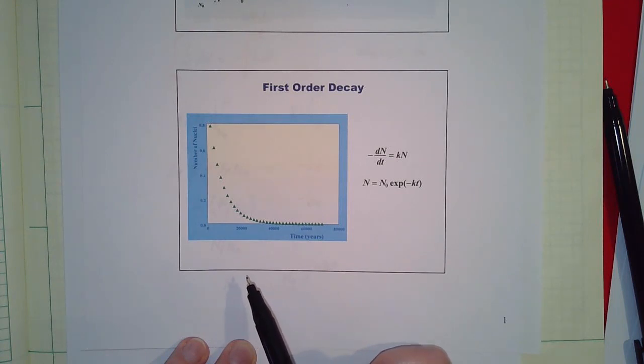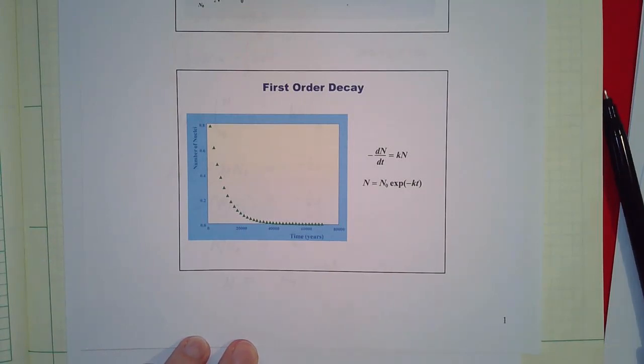Okay, so that's how radiocarbon dating works. All right, our next topic will be the kinetics of polyesterification, and that's what we will be doing for step growth polymerization kinetics. Thanks.